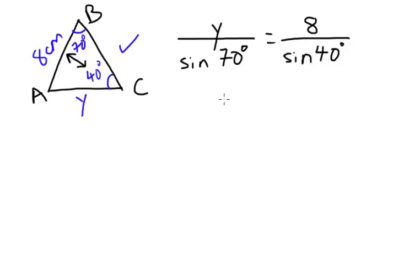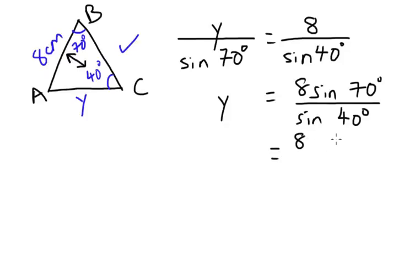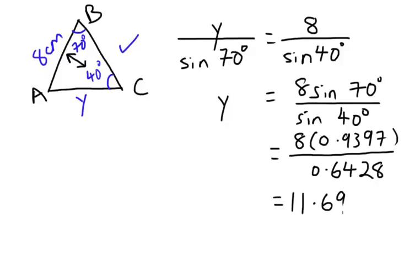Now just type into your calculator and rearrange it. So it means Y equals to 8 sine 70 over sine 40. And now you can just use your powerful calculator. So we put in sine 70, which you get from a calculator 0.9397. Sine 40, you get 0.6428. And now you can plug in into your calculator again. You get 11.6951 cm. And that is the length for your Y or we can say the length of AC.